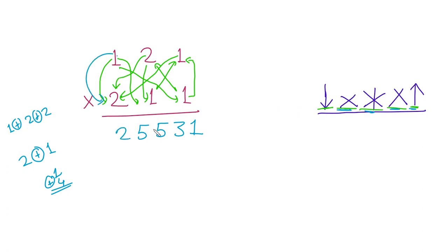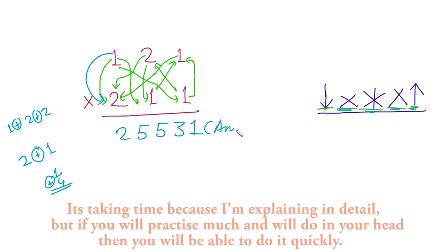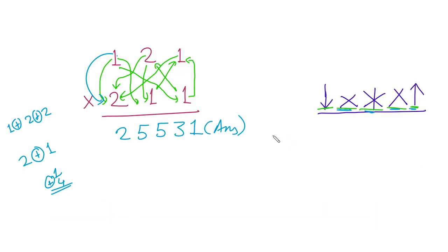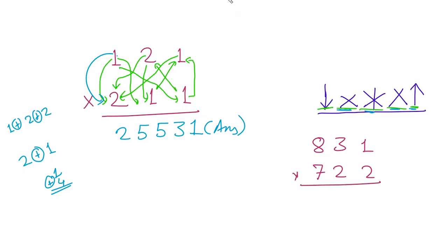So 25531 is our answer. Now let's take another example in which we have to carry. Suppose we multiply 831 by 722. Following the same steps: first, 2 multiplied by 1 is 2, we write 2. Then 2 multiplied by 3 is 6 and 2 multiplied by 1 is 2; 6 plus 2 is 8, so we write 8.